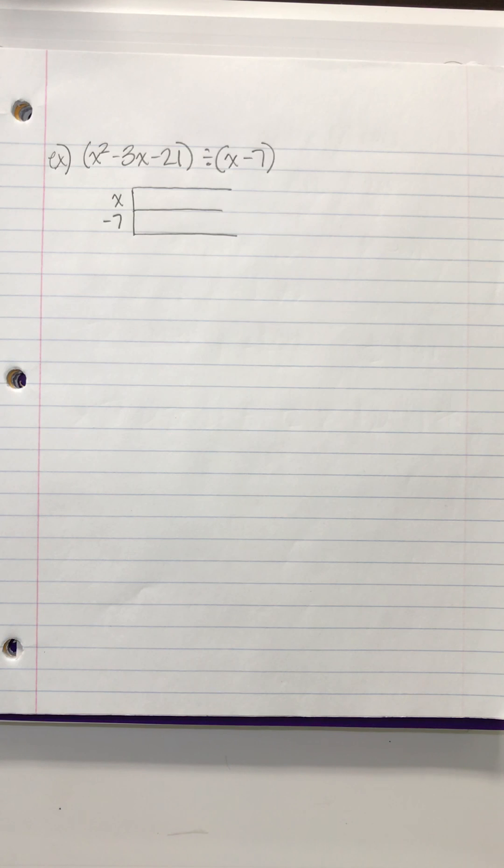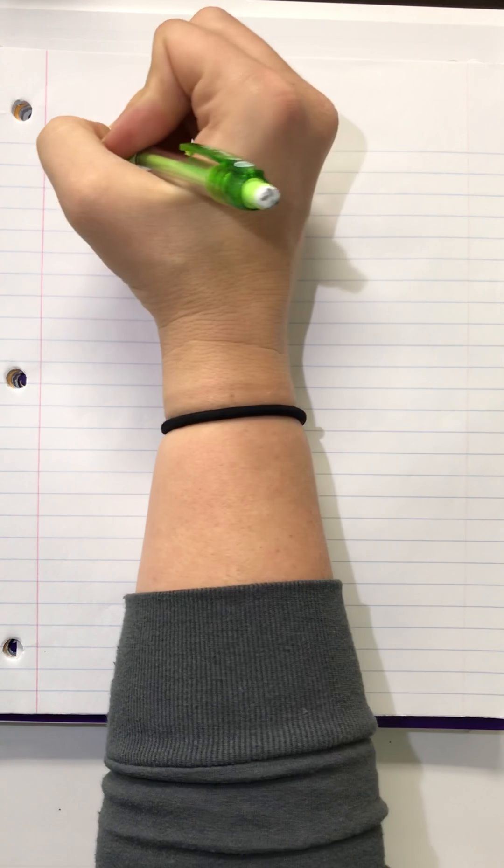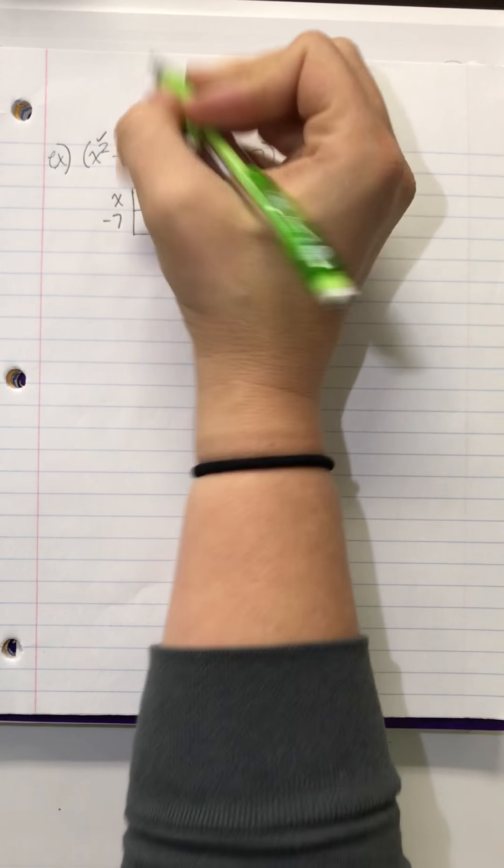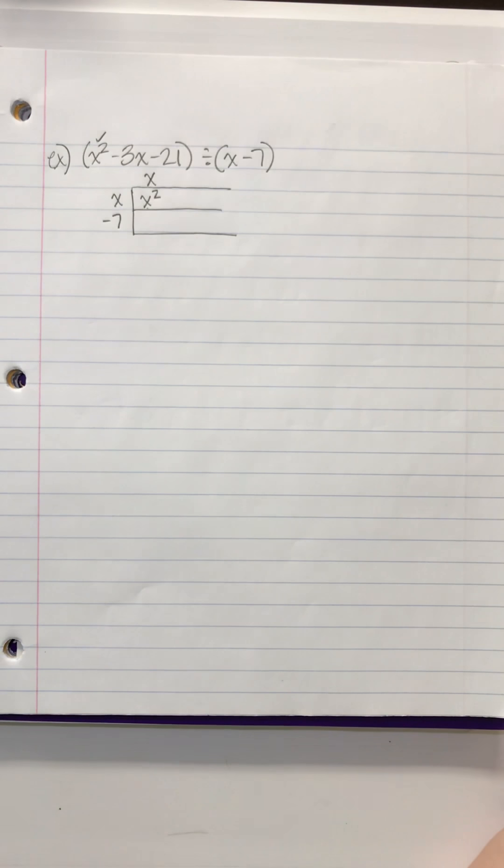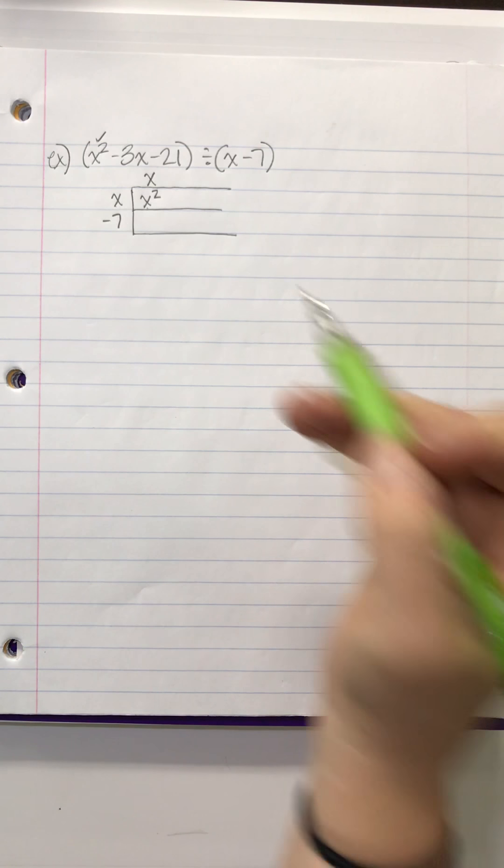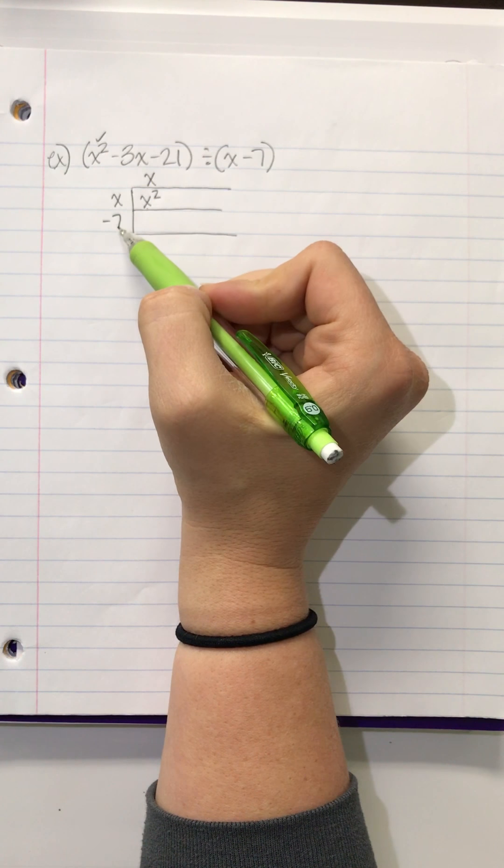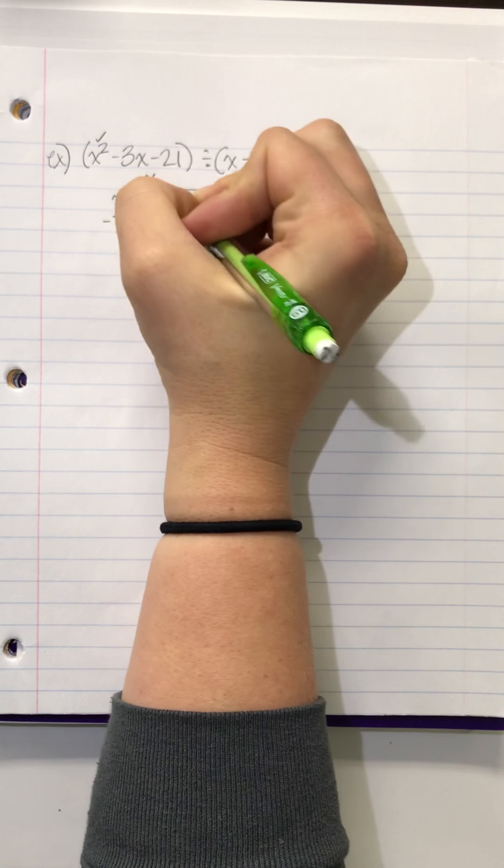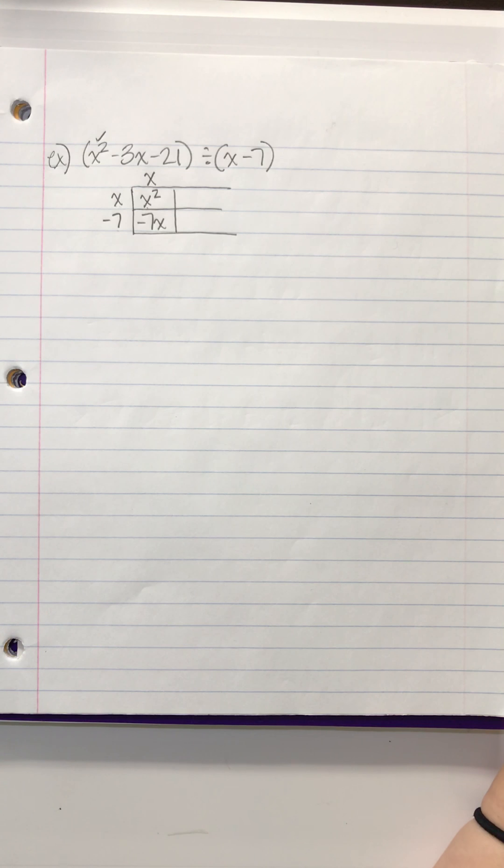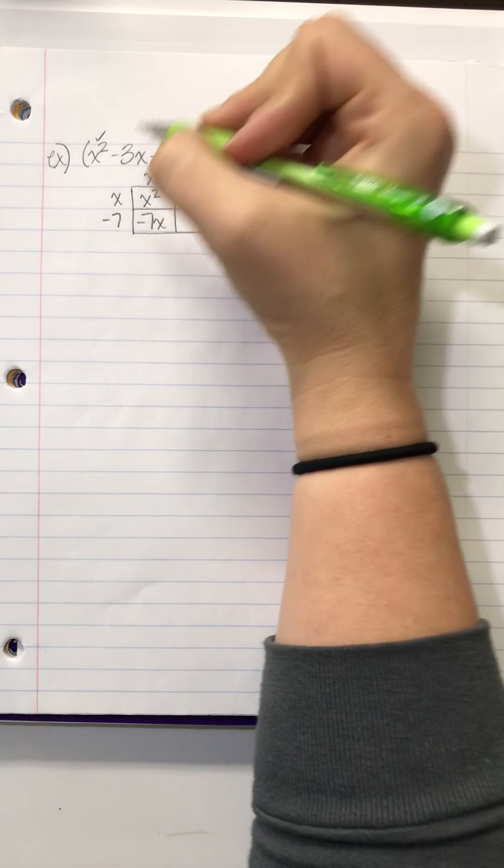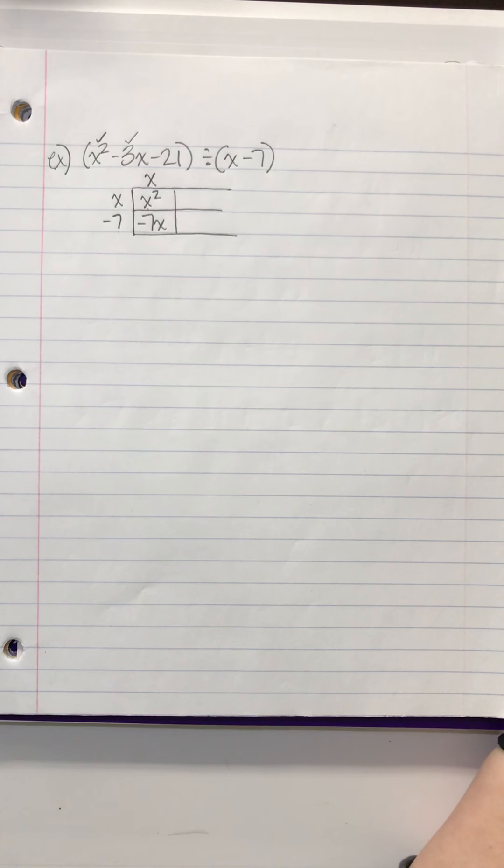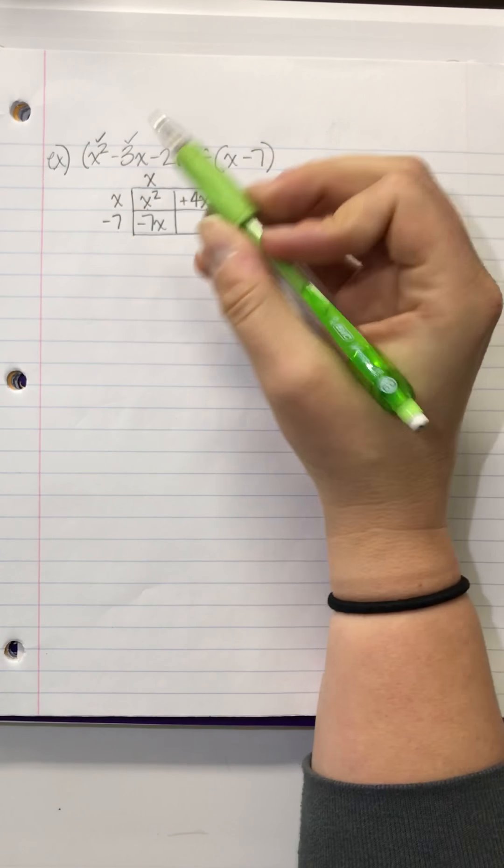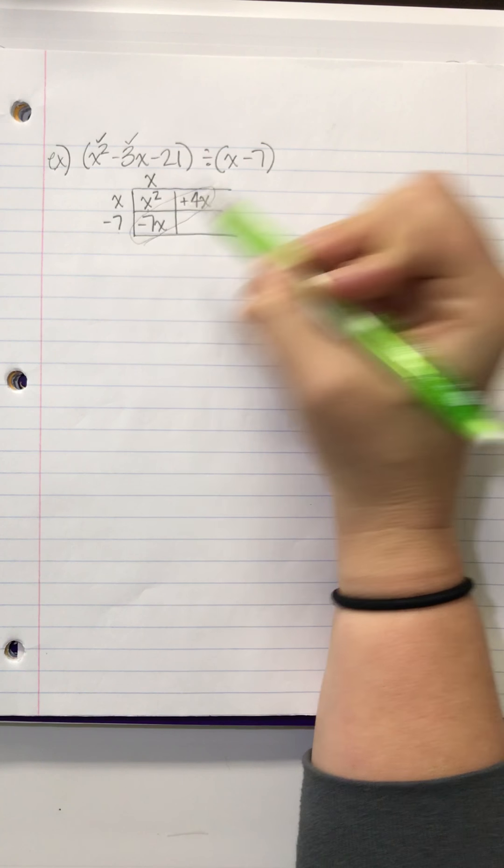I need, in the first box, an x squared. Well, that's easy. How do I turn an x into an x squared? I multiply by an x. So, if there's an x up top, what happens when I multiply that by the negative 7? Negative 7x. I don't want a negative 7x. What do I want? I want a negative 3x. So I need a positive 4x so that that works out. That way, when I combine these, I get the negative 3 that I want.